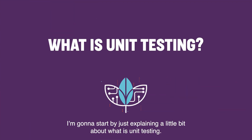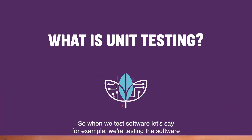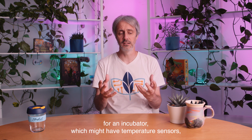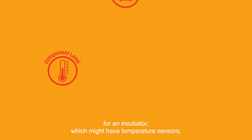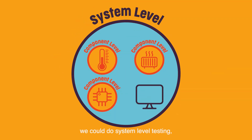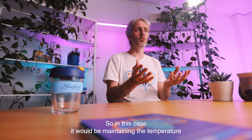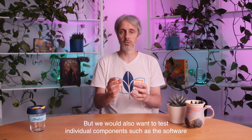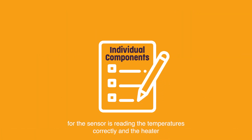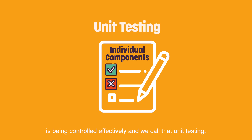Today I'm going to be talking about test-driven development. I'm going to start by just explaining a little bit about what unit testing is. When we test software — for example, software for an incubator which might have temperature sensors, a heater, some kind of controller and a display — we could do system level testing, which is checking that the whole system works together, in this case maintaining the temperature of the incubator. But we would also want to test individual components, such as that the software for the sensor is reading the temperatures correctly and the heater is being controlled effectively. We call that unit testing.